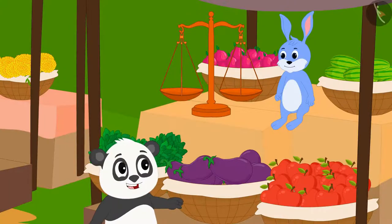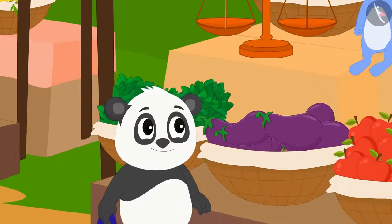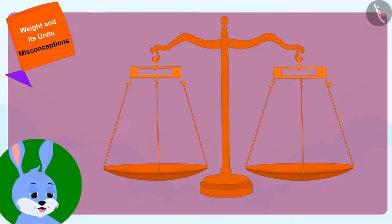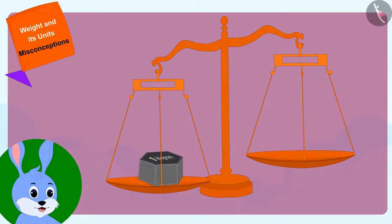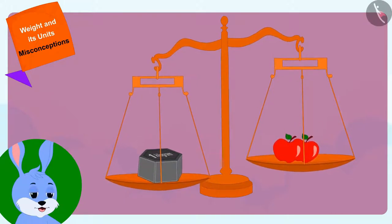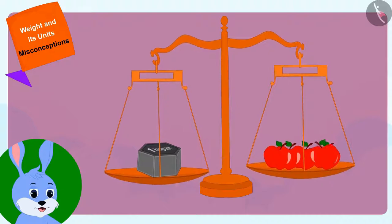'Bunny, give me apples for 50 rupees please,' Golu said to Bunny. Bunny put a weight of one kilogram in one plate of his weighing scale and weighed apples in the other plate until the two plates came to the same level.